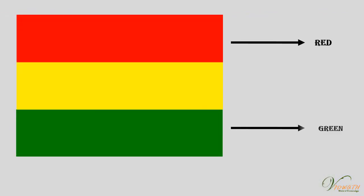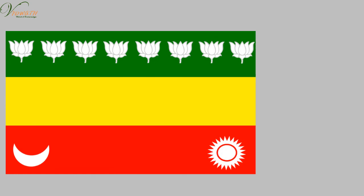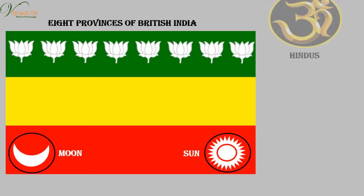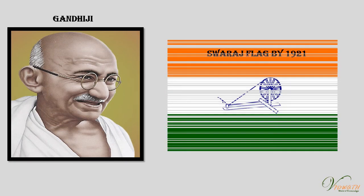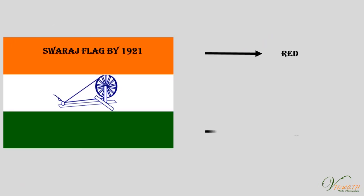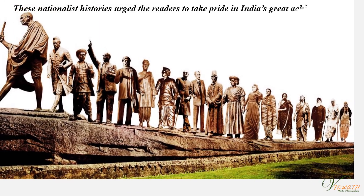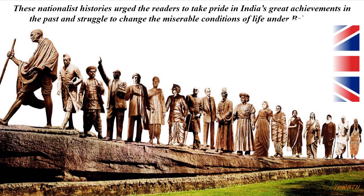The national flag which we see today has evolved through various stages. A tricolour — red, green and yellow — was used during the Swadeshi movement, with eight lotuses depicting the eight provinces of British India, and a crescent moon and sun representing Hindus and Muslims. Gandhiji designed the Swaraj flag by 1921: also a tricolour — red, green and white — with a spinning wheel in the centre. These nationalist histories urged readers to take pride in India's great achievements in the past and to struggle to change the miserable conditions of life under British rule.